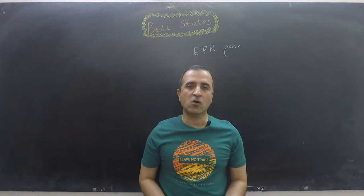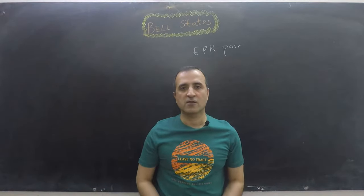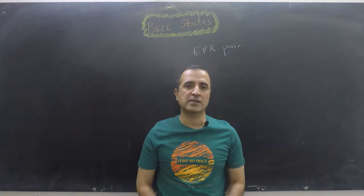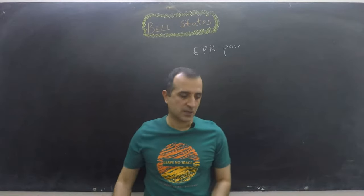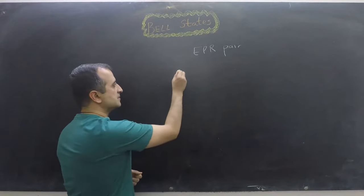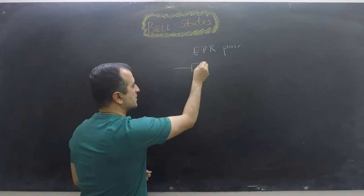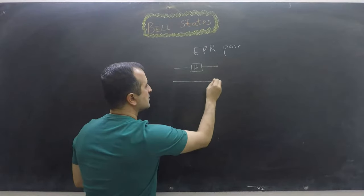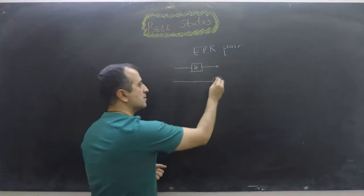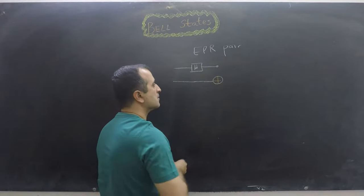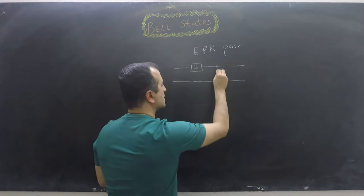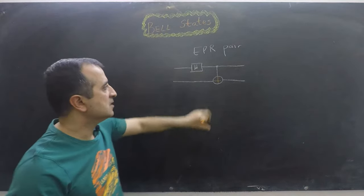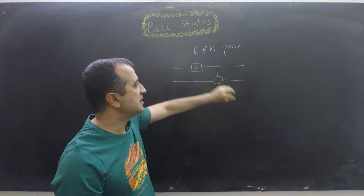In order to create Bell states we need only two quantum gates: one is CNOT and one is Hadamard, and we have learned about these two gates in our previous videos. This is the simple circuit that creates Bell states. For the first qubit we apply Hadamard, and then on the result we apply the CNOT gate, and then we have a Bell state.